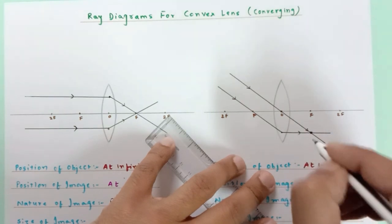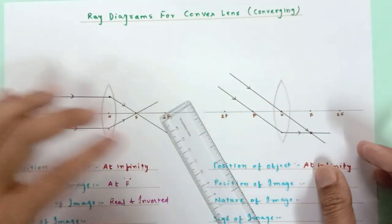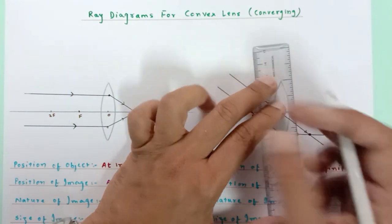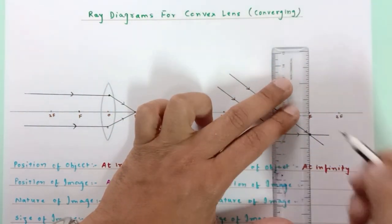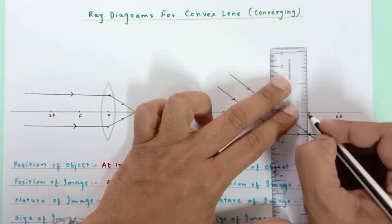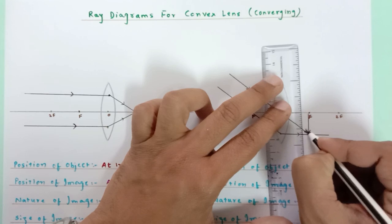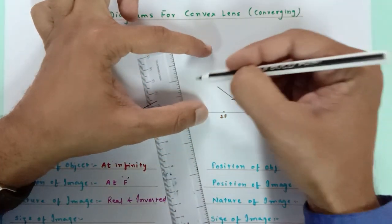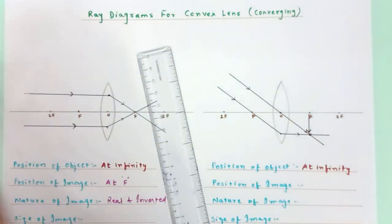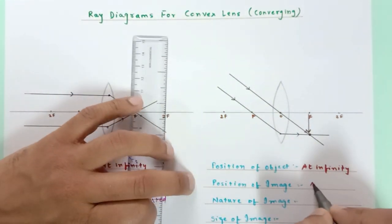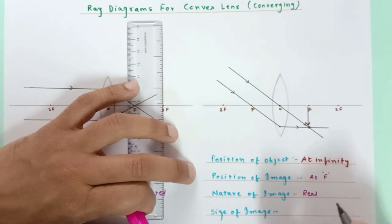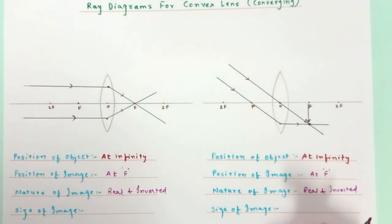The point of image formation is the point where refracted rays meet. Here the refracted rays are actually meeting, so the image would be real. Real images are inverted — if we consider the object to be an arrow with its head up, the image would be inverted with the head down. Position of image: at f. Nature of image: real and inverted.